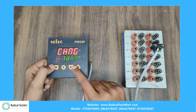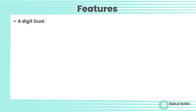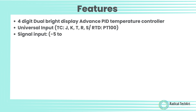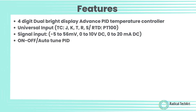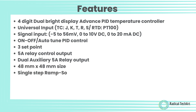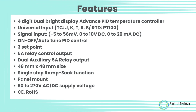Features include: 4-digit dual bright display, Advanced PID Temperature Controller, Universal Input supporting TC types J, K, T, R, S, RTD PT100, signal inputs from -5 to 56 mV, 0 to 10 V DC, 0 to 20 mA DC, ON/OFF and Auto-Tune PID control, 3 setpoints, 5-ampere relay control output, dual auxiliary 5-ampere relay output, 48mm x 48mm size, single-step ramp soak function, panel mount, 90 to 270 V AC/DC supply voltage, CE and RoW certified.